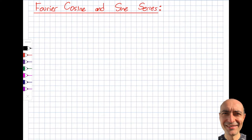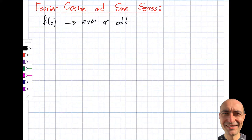We're going to talk about the Fourier cosine and Fourier sine series. The effort of expanding a function — the goal is to expand f(x) in a Fourier series — is reduced significantly when f(x) is in a special form where it's either even or odd. That makes life a little bit easier. Before talking about the Fourier series expansion, let's discuss what we mean when we say even or odd.